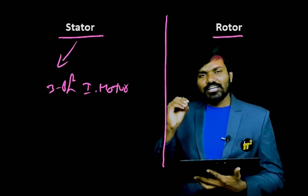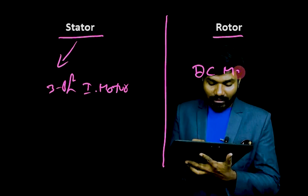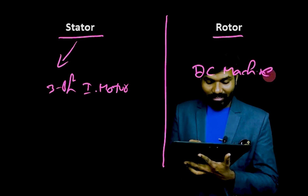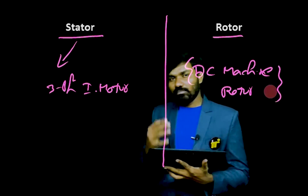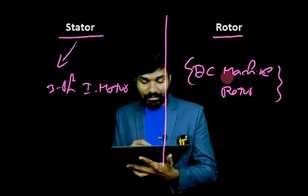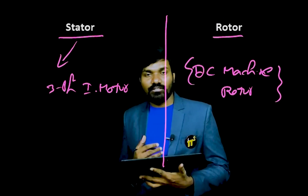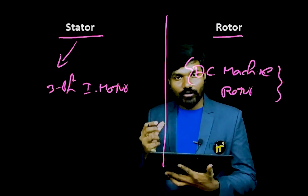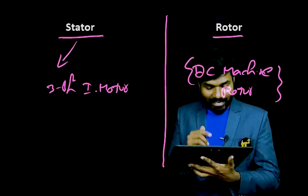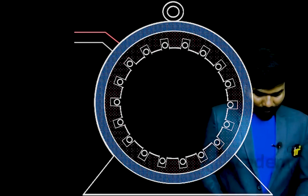Rotor construction is just the same as a DC machine rotor construction. What do you have in case of a DC machine rotor? You will have armature winding, you will have the commutator, you will have the brushes — just the same you will have in this case as well. So this is the construction.